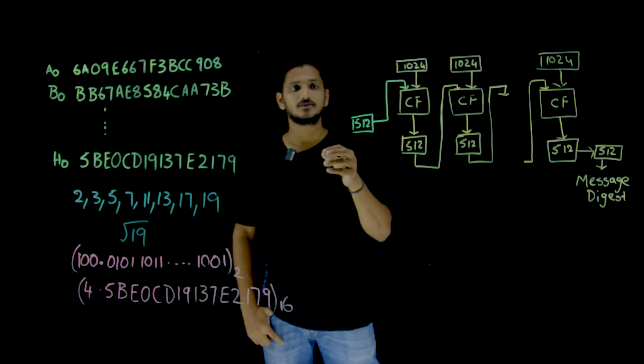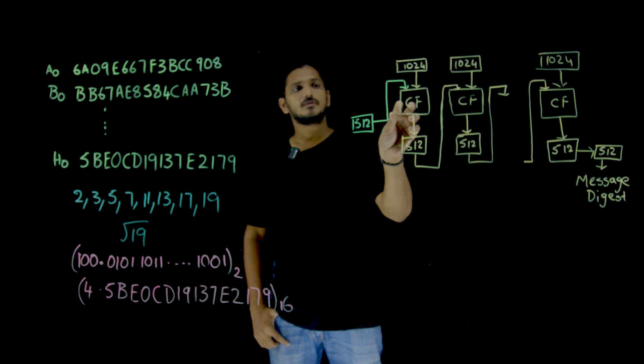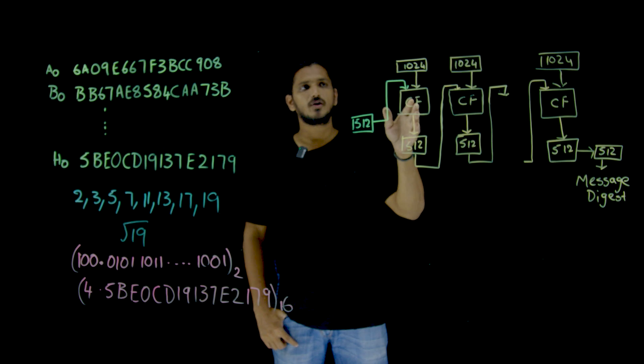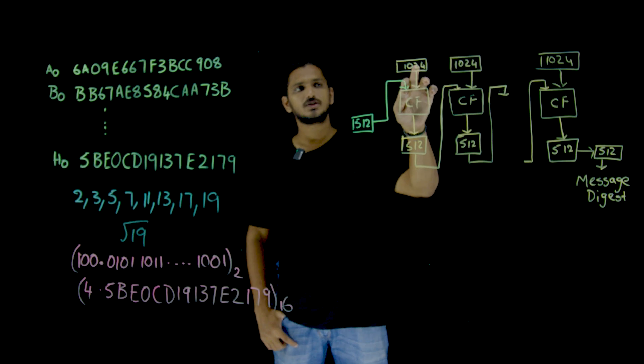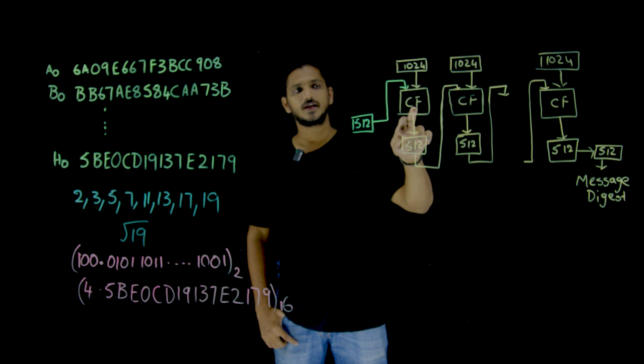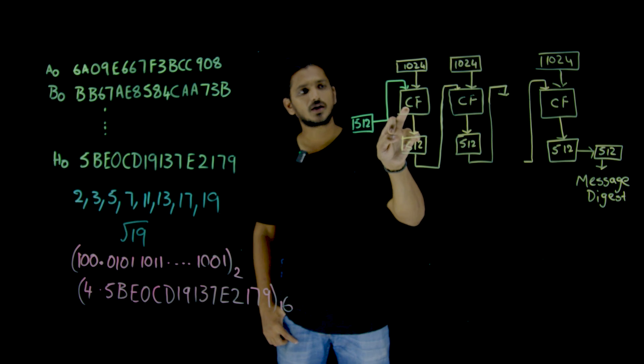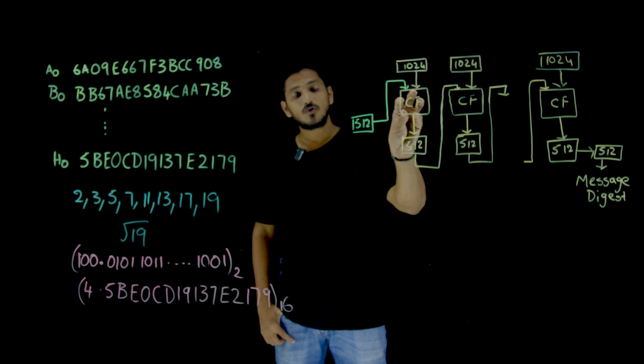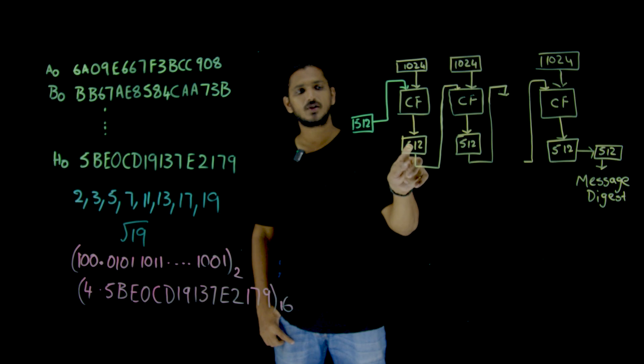We discussed in our last class that in SHA-512, we divide our message into 1024 bits. These 1024 bits are taken as input into the compression function. Along with this, the output from the compression function is 512 bits.